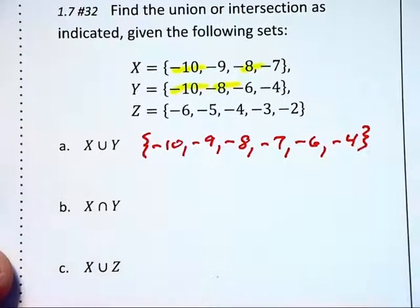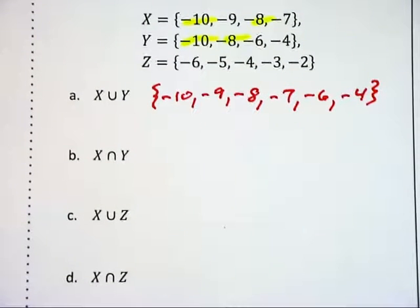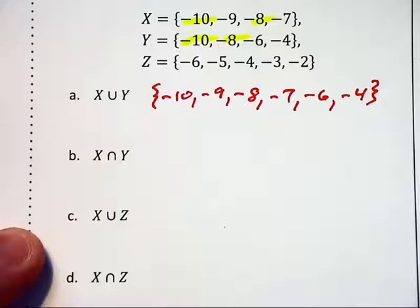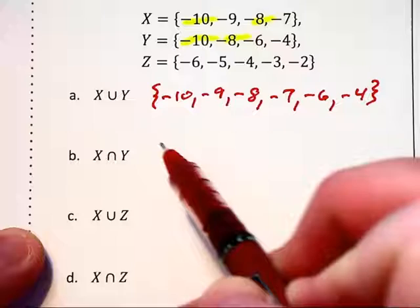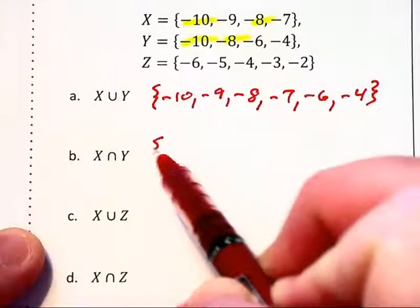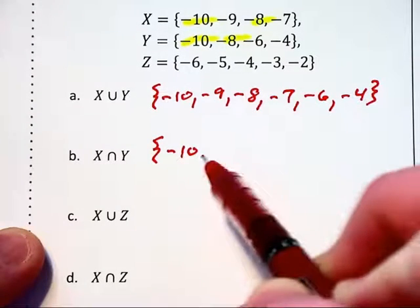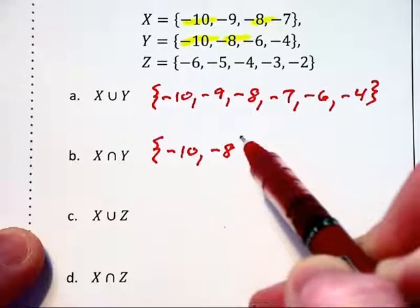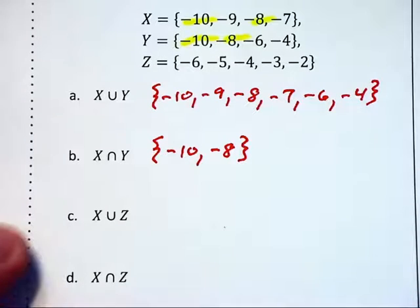When we find the intersection of sets X and Y, we are asking for those values or elements that are common to each set — they overlap, so to speak. We've already highlighted that at negative ten and negative eight we have an overlap situation.